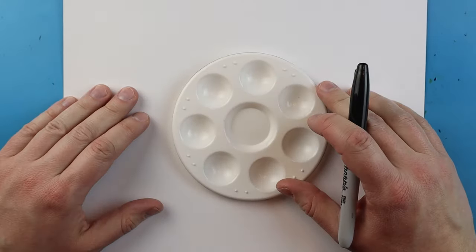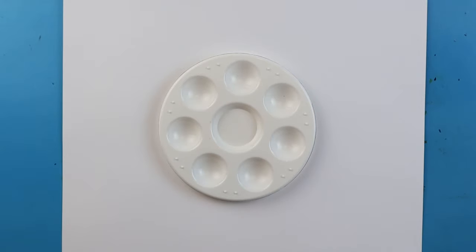Now to start off with our planet Mars, we want to make a nice big circle. You can either draw this by hand or you can trace something. I'm just going to use this little paint palette and I'm going to put this right here in the middle.